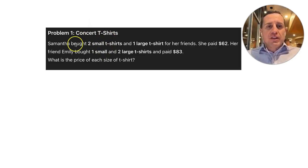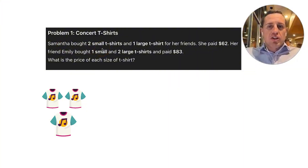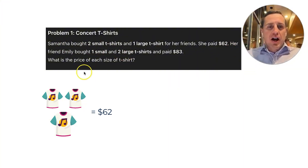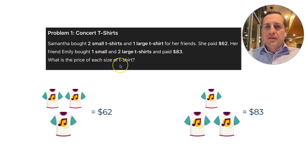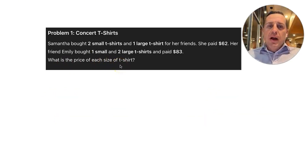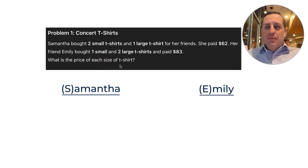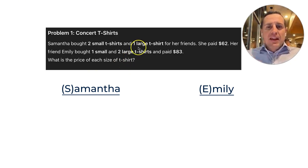Problem number one: concert t-shirts. Samantha bought two small t-shirts and one large t-shirt for her friends and paid $62. Her friend Emily bought one small and two large t-shirts and paid $83. What was the price of each t-shirt? We have Samantha and Emily, and then small and large t-shirts — call them S and L.